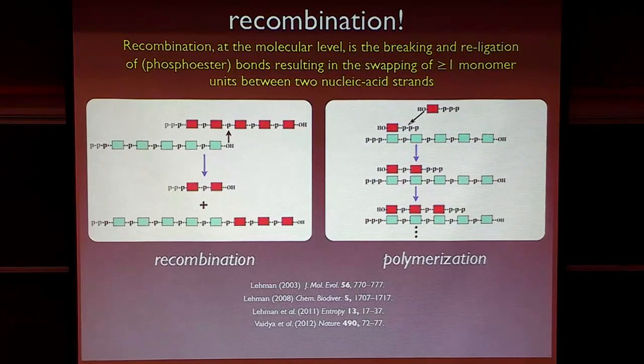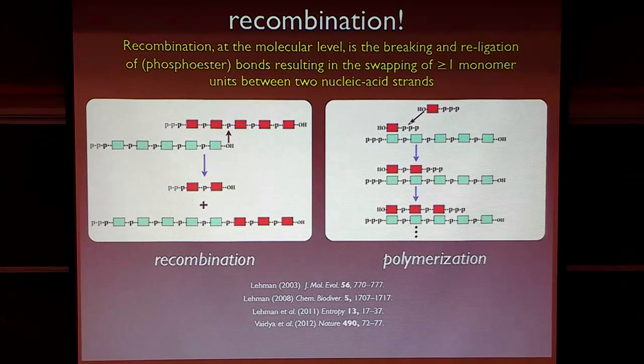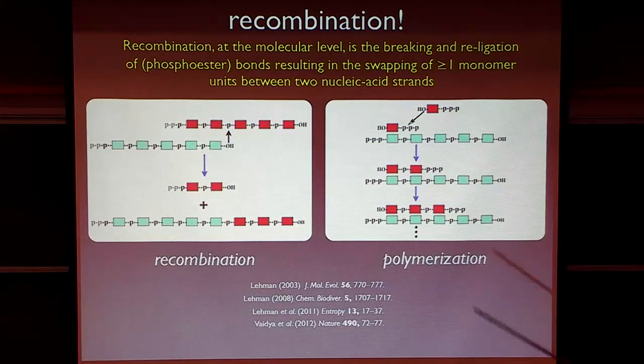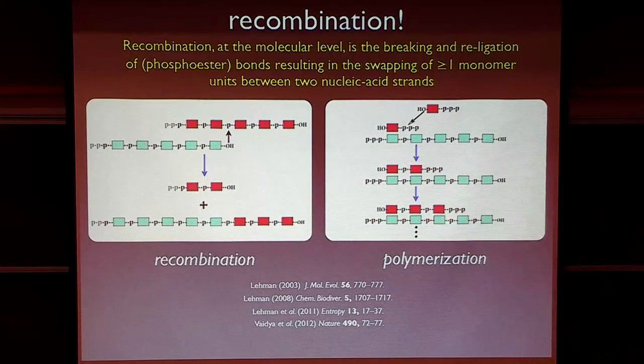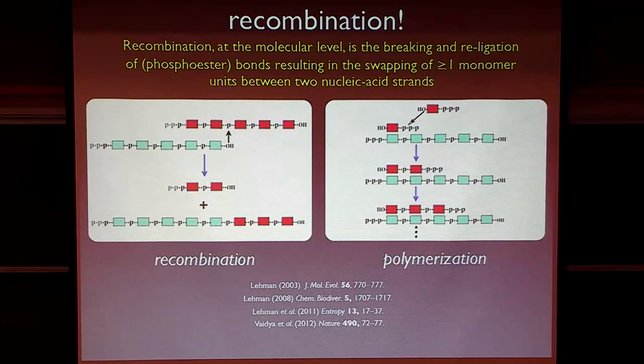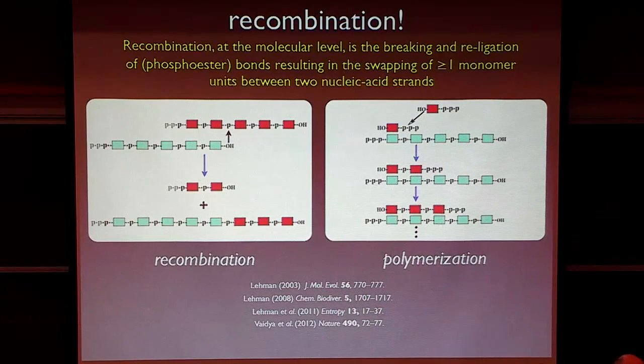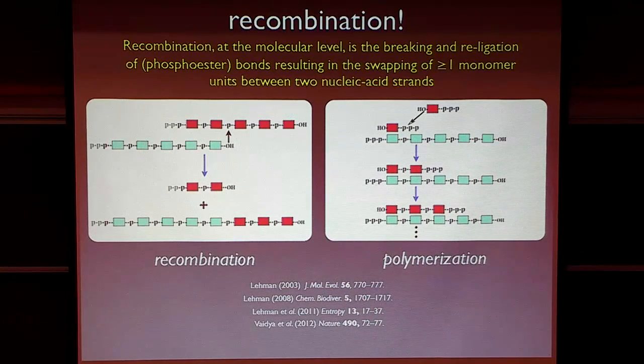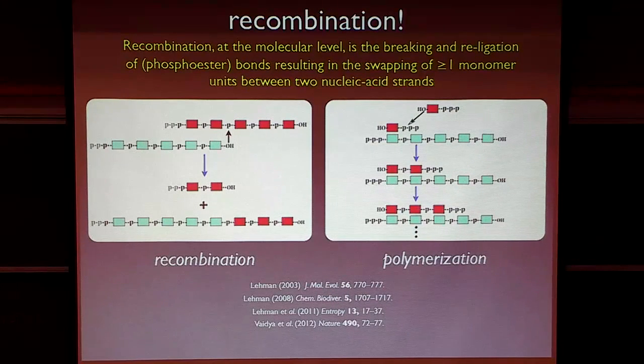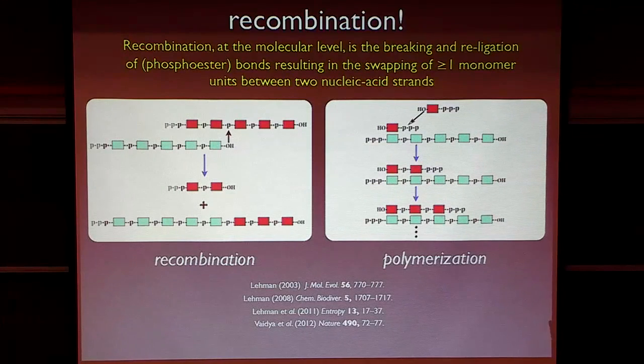And you can contrast this to the other kind of replication that people are more familiar with, this notion of polymerization, where you have a template, in this case, the green strand, and then we make a copy on it by adding single red components to it one at a time. It's my premise that this type of mechanism, this recombination, had utility in the origins of life because it's chemically simple, and we can make very large jumps in sequence space in a very short period of time.